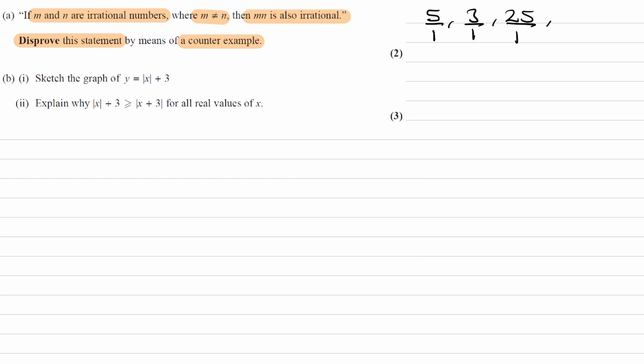Another example of a rational number would be something like 1 over 3. An irrational number is one which can't be expressed in that form. Examples of irrational numbers are root 2 — you can't express root 2 as a simplified fraction of integers — or pi, or Euler's number e, or e to the power of something, or pi to the power of something. These are examples of irrational numbers.